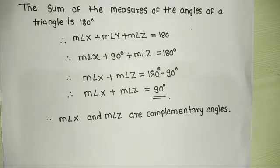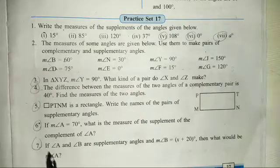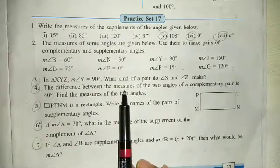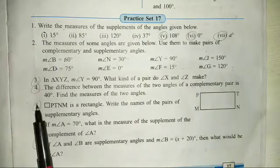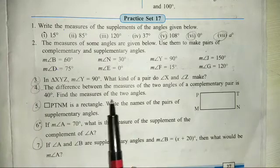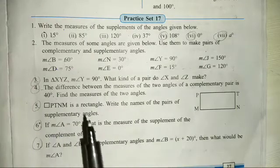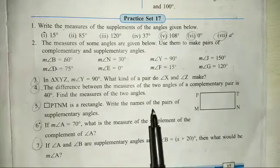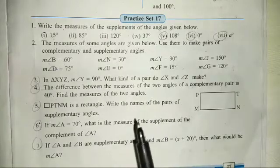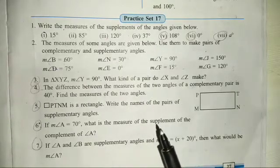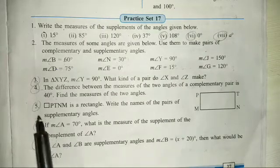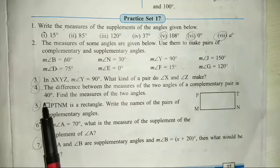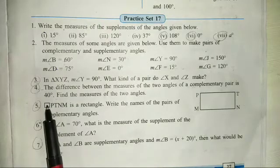The difference between the measure of the two angles of a complementary pair is 40 degrees. Find the measure of the two angles. We have a complementary pair of two angles where the difference between the two angles is 40 degrees. Suppose the smaller angle is X. Then the other one is X plus 40 degrees.